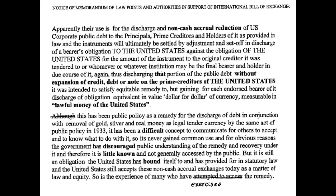When your business fails because you don't accept real money from the people — that's on you. This discharge of obligation is equivalent in value dollar for dollar of currency measurable in lawful money of the United States, which is gold. This has been public policy as a remedy for discharge of debt in conjunction with the removal of gold and silver as legal tender since 1933. The government has discouraged public understanding of this remedy, so it's little known and not generally accessed.